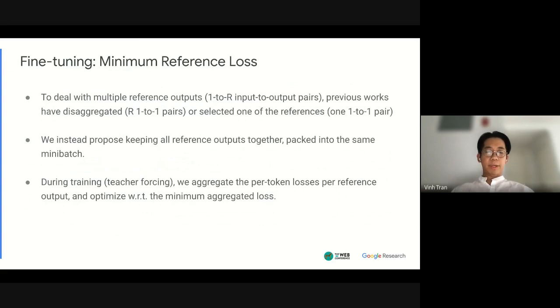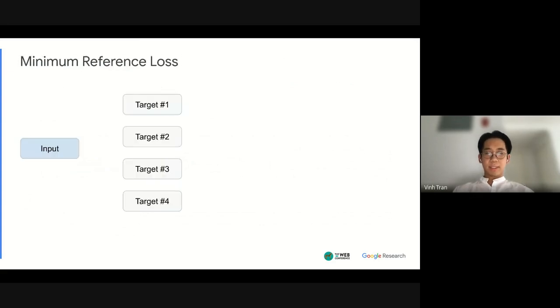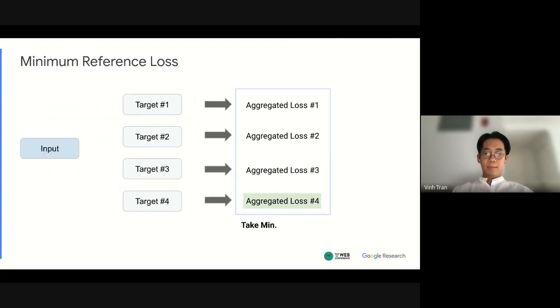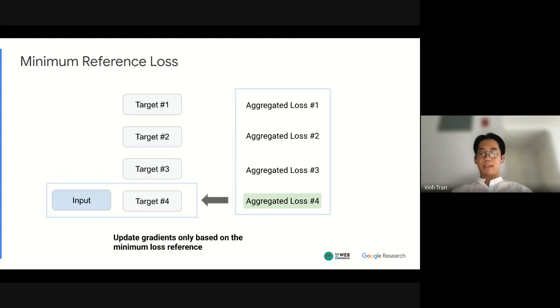Finally, once we have this mid-trained model, we fine-tune the model on our news quiz QA data set. And since this data set has four correct reference outputs, we have to figure out what to do with them. Previous works have actually disaggregated the multiple reference outputs into individual pairs, but we actually instead proposed keeping all the reference outputs together packed into the same batch. And then during training we actually define a loss over all of these correct outputs. And what this loss does basically is that given an input and we have say four correct targets, during teacher forcing we compute the aggregated loss against each target, then we take the minimum of these losses and then update the gradients for the model based only based on the target that had the lowest loss. So in some sense, this target was the easiest target to learn.